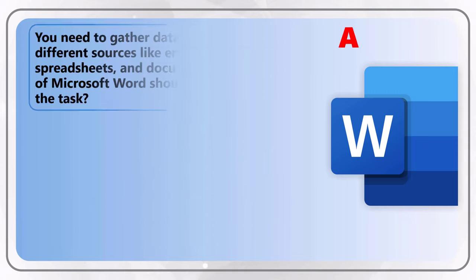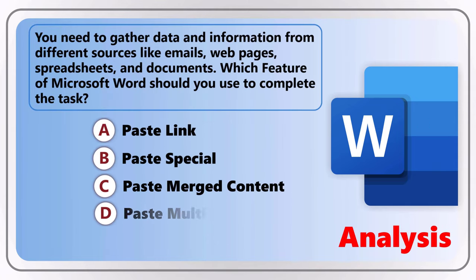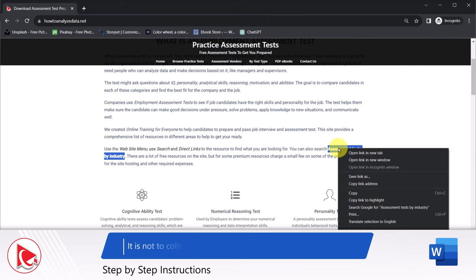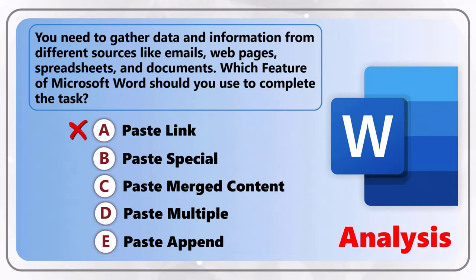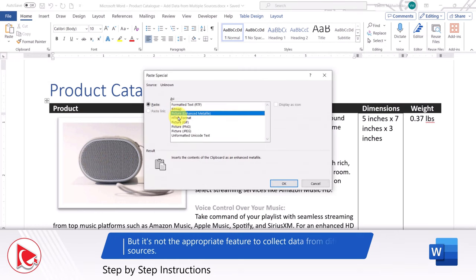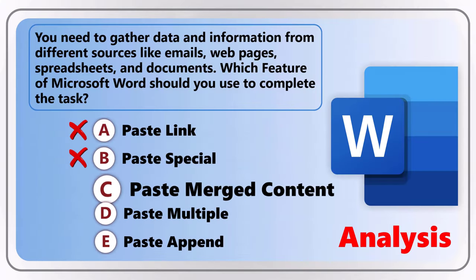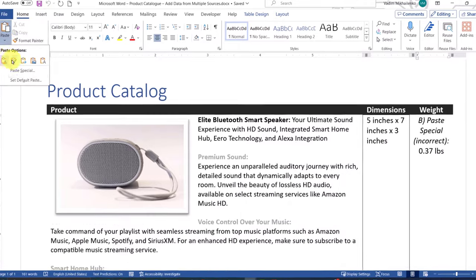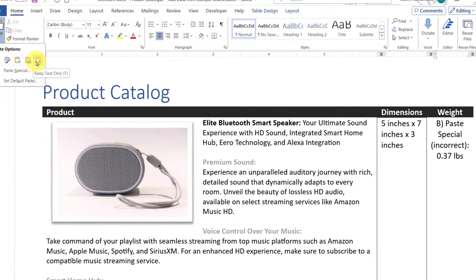Let's reveal the solution. To find the right solution, we will assess each answer choice. Choice A, Paste Link, is incorrect — it is used to insert a link to content copied from another location, not to collect data from various sources. Choice B, Paste Special, is also incorrect — it allows you to choose specific formatting or data types when pasting, but it's not appropriate for collecting data from various sources. Both Choice C, Paste Merged Content, and Choice E, Paste Append, are also not standard features of Microsoft Word and are not relevant for collecting data from various sources.